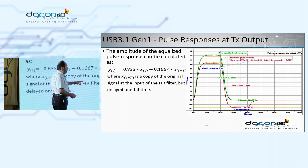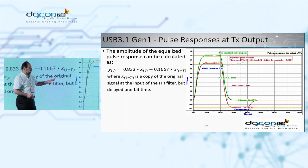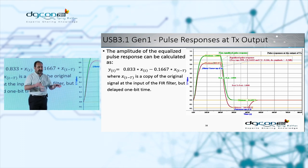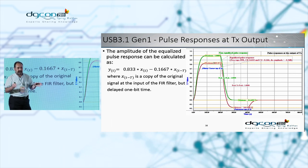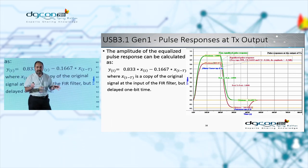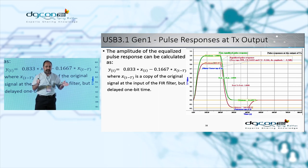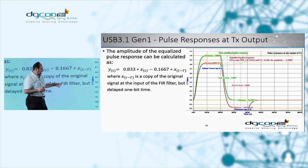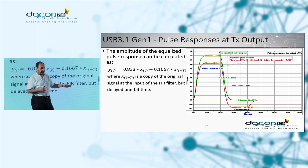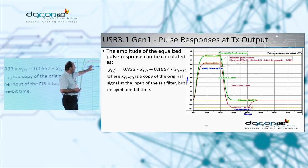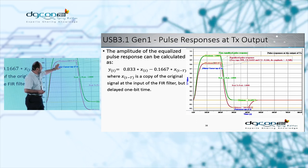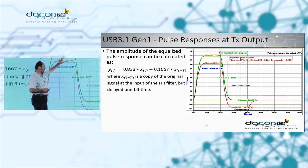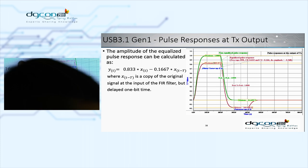An important relationship governs FIR tap coefficients: the sum of the absolute values of all taps — main cursor, precursors, and postcursors — equals 1. The main cursor is always positive while precursors and postcursors are negative, meaning when transmitter equalization is applied, the amplitude of the equalized signal is always lower than the non-equalized signal.